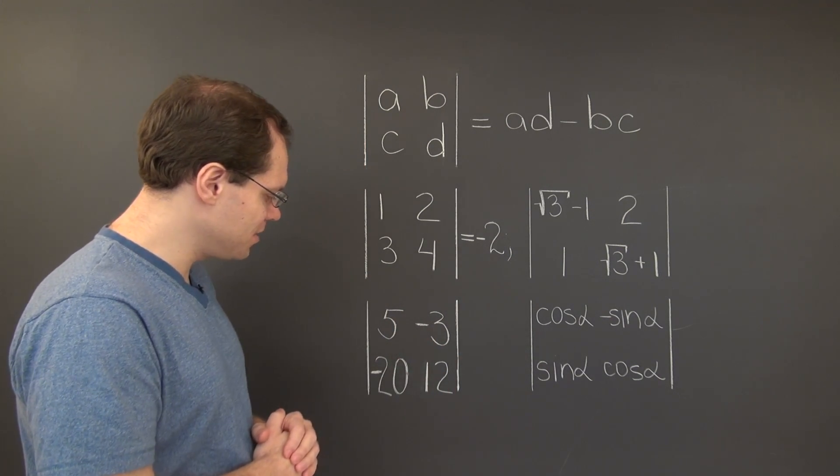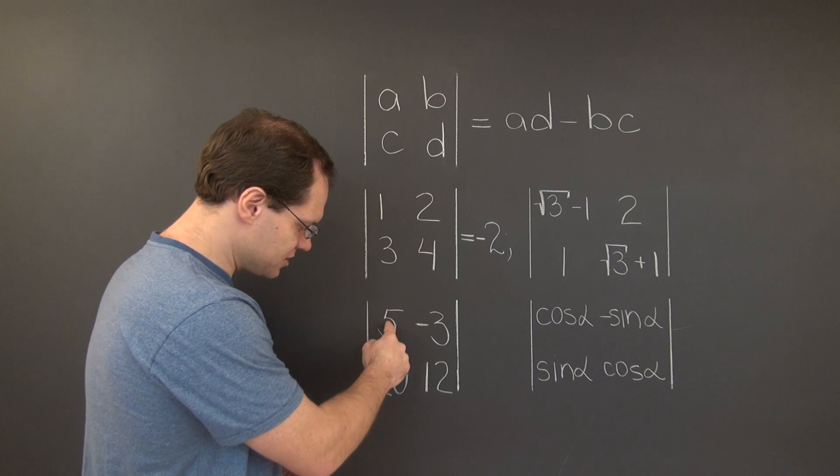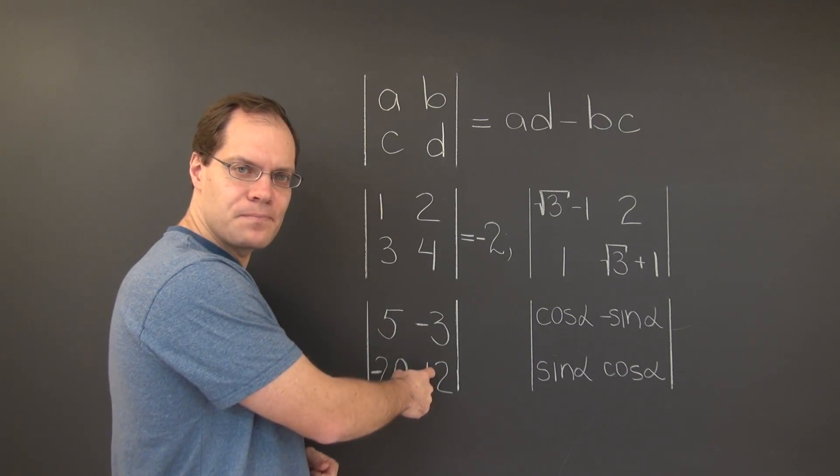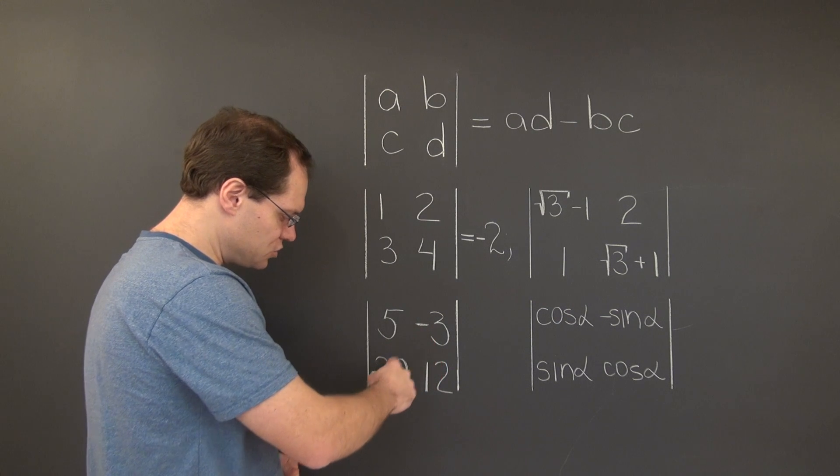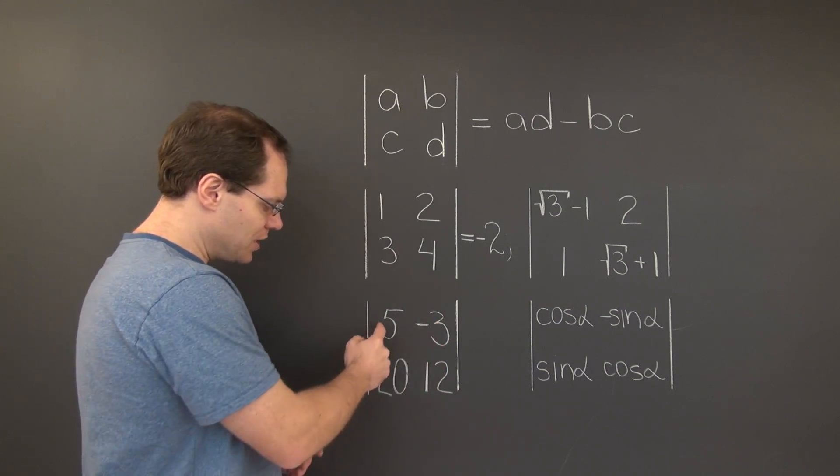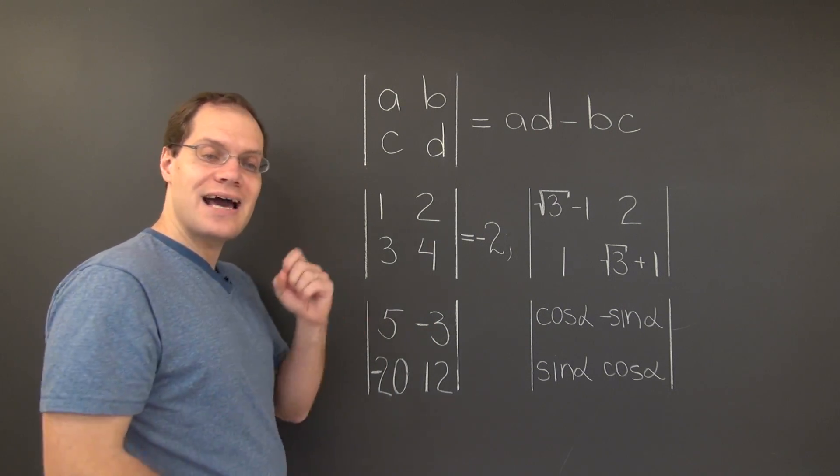Moving on to the second example, the determinant of this matrix equals 5 times 12, which is 60, minus the product of these two entries. The two minuses cancel, and we have 60 minus 60, which is 0.